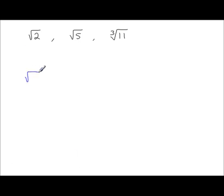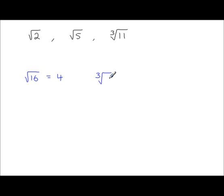If you have the square root of 16, you can simplify this to give you 4. So the square root of 16 is not a surd. Likewise, the cube root of 8 is not a surd because that gives you an exact value: 2.